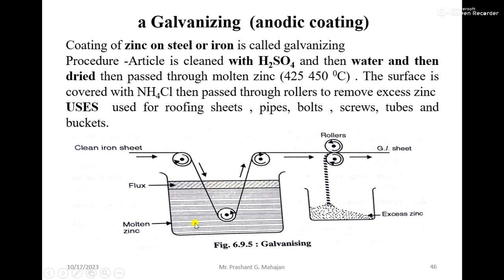In galvanizing, molten zinc is kept at 425 to 450°C and is covered with a flux of NH4Cl. The clean iron sheet is dipped in the molten zinc solution, then passed through rollers to remove excess zinc and ensure uniform coating. The article is first cleaned with H2SO4, then water, then dried, before being passed through the molten zinc.